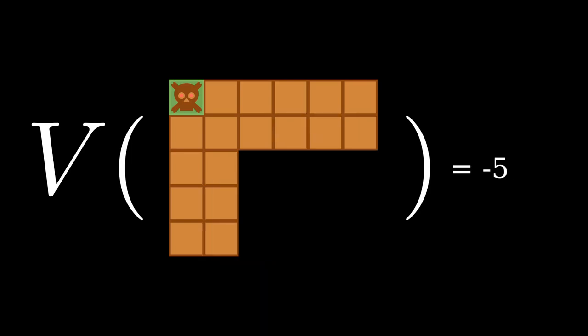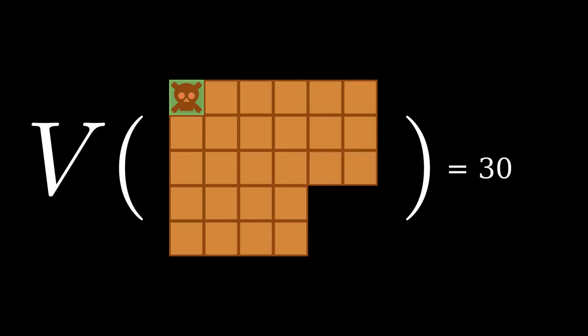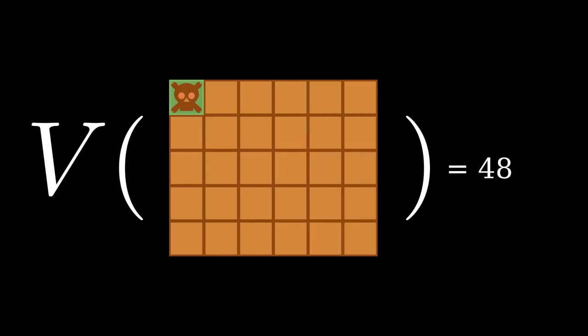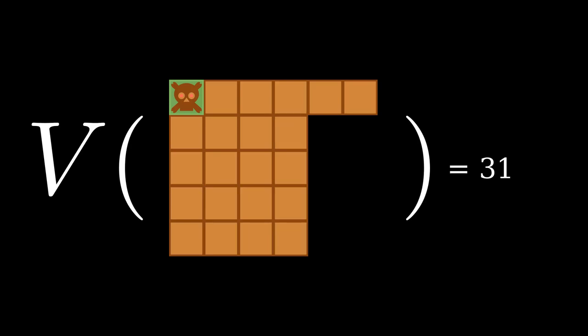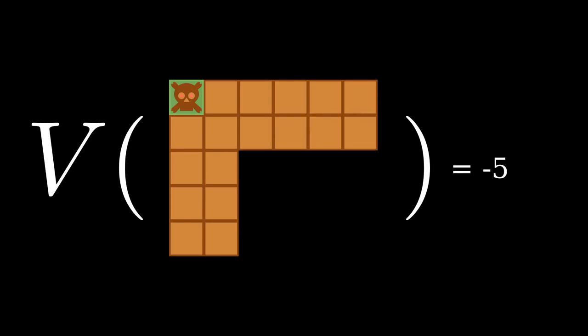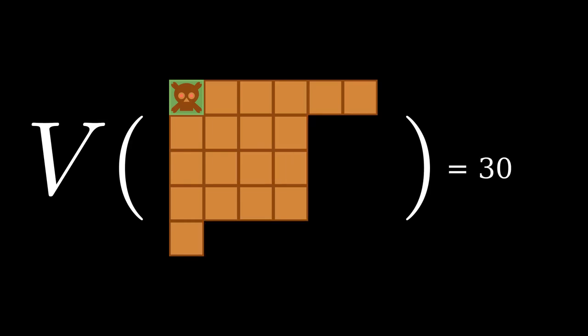To apply the same learning rule to this game, we need to find some way to represent the value of each game board configuration. This was trivial for the subtraction game because the game state was just a single non-negative integer. We just used an array for V. What can we use for the Chomp game?